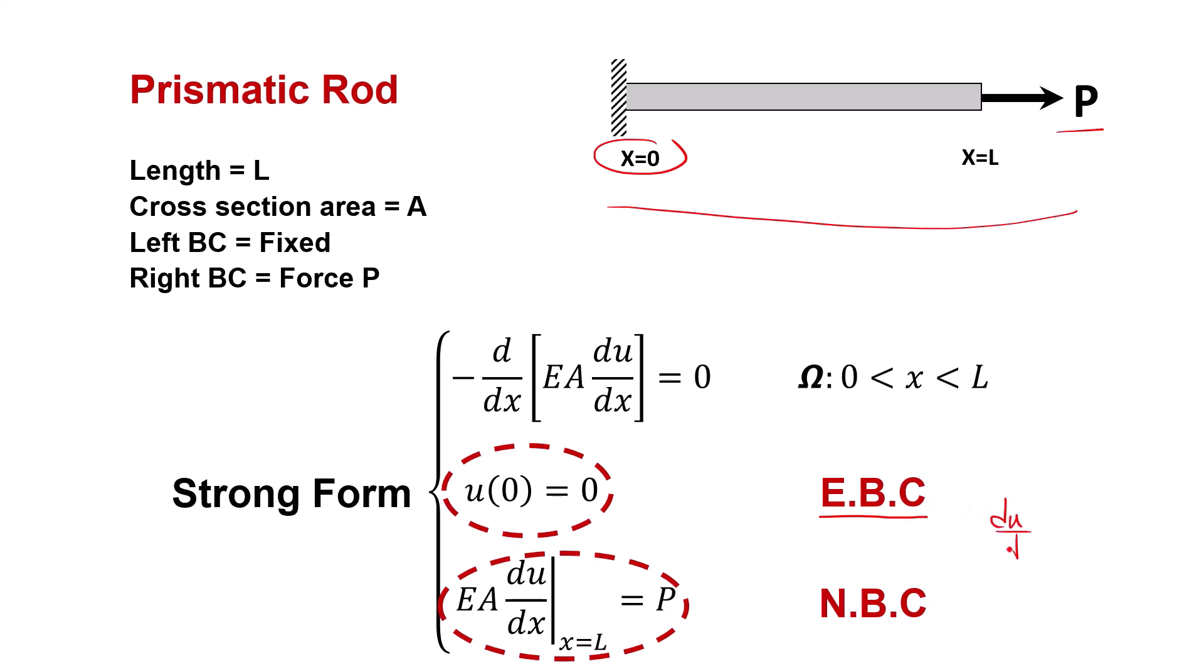Here, du/dx is the strain, and when we multiply it by EA, we get the force at the point we are interested in, in this case, x equal to L.